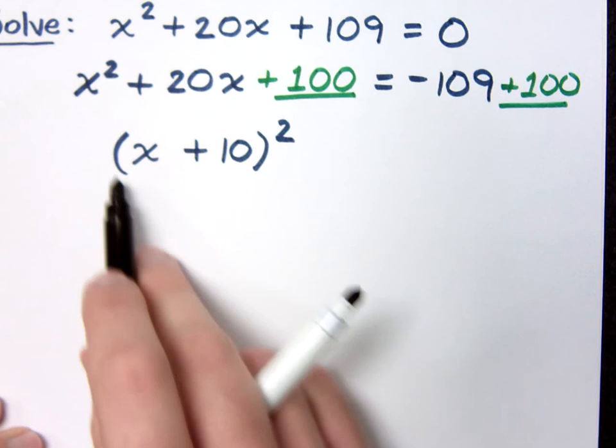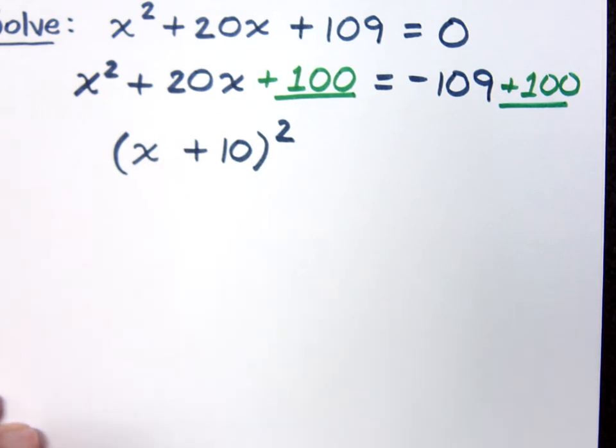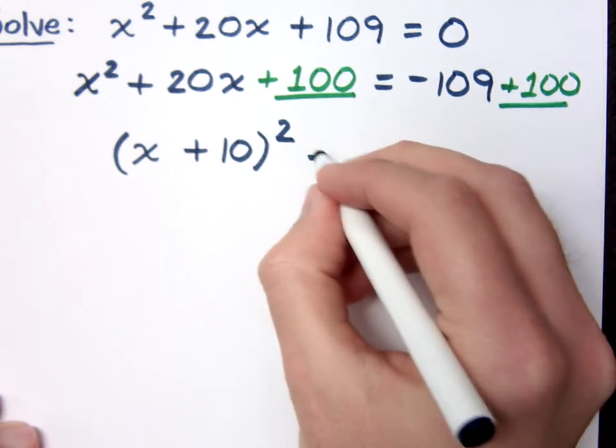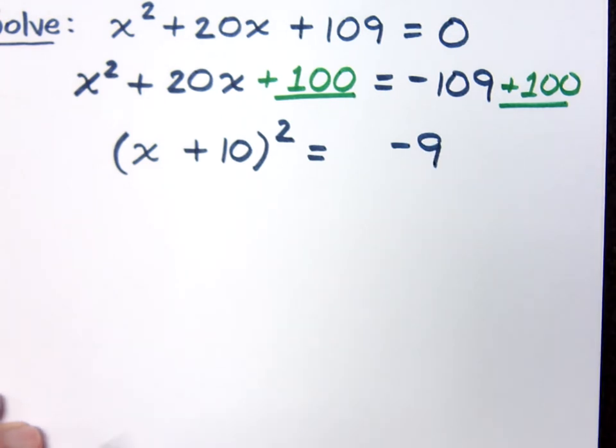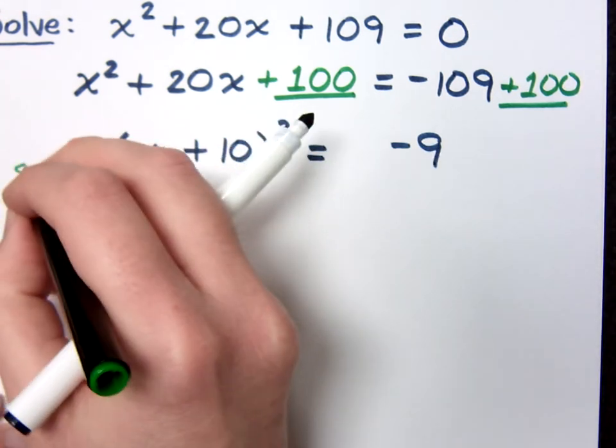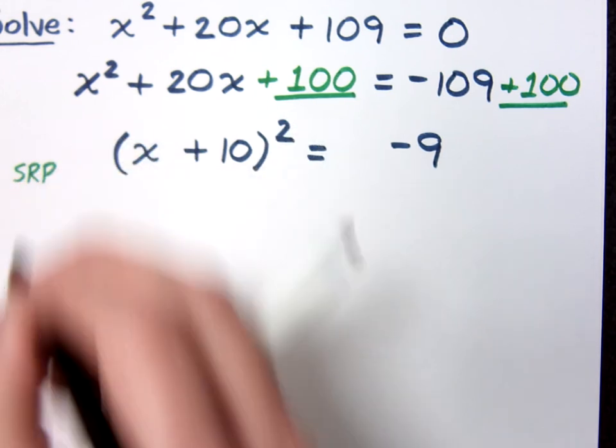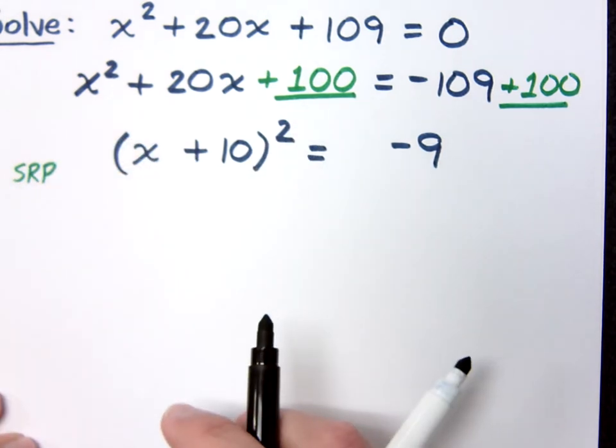So the reason I wanted this so that I can have a square but why did you want to have a square in the first place? So I could use the what? I was completing the square so I create a situation where I would use the square root property.